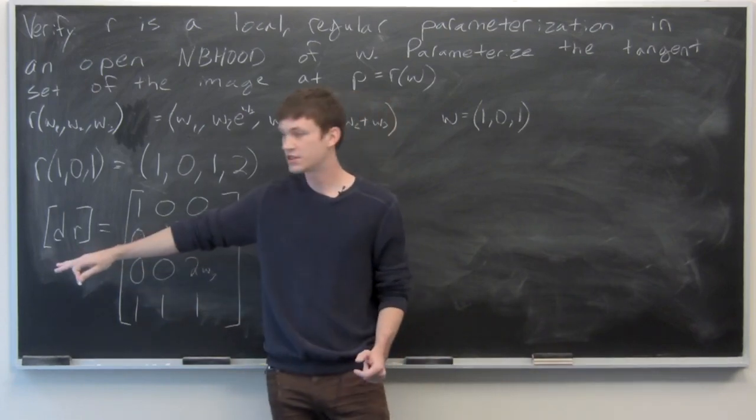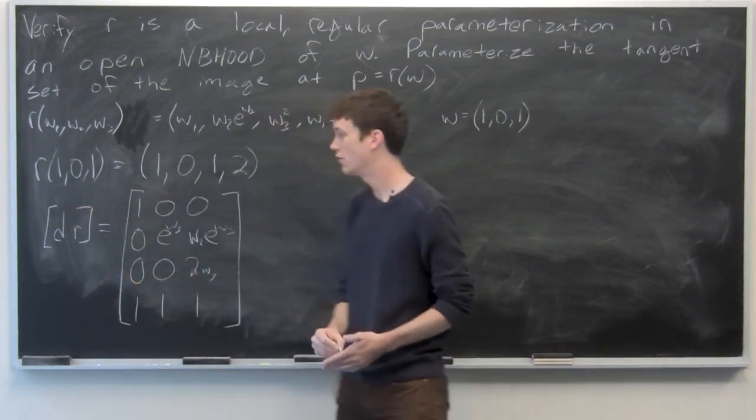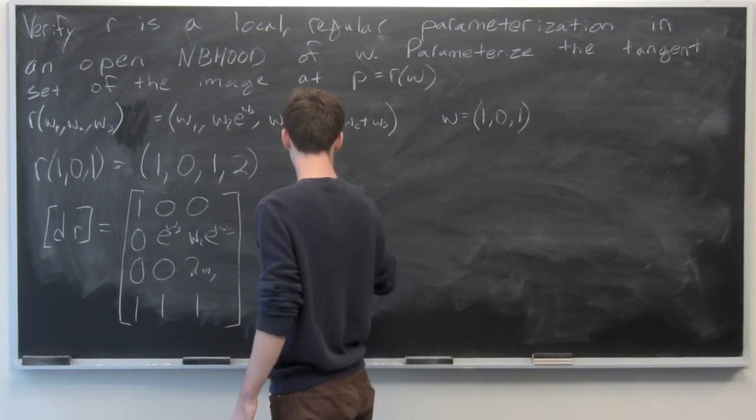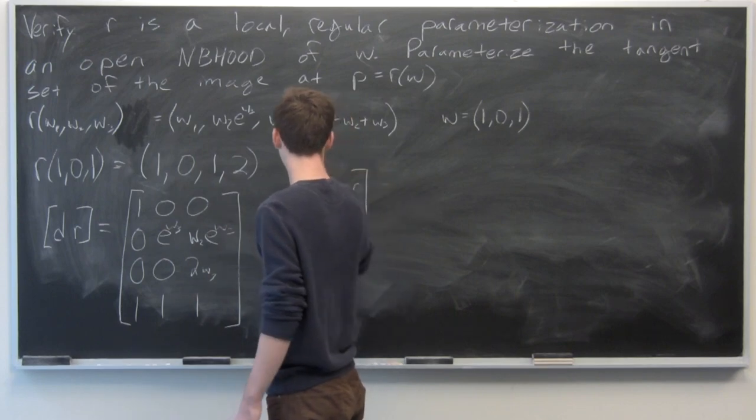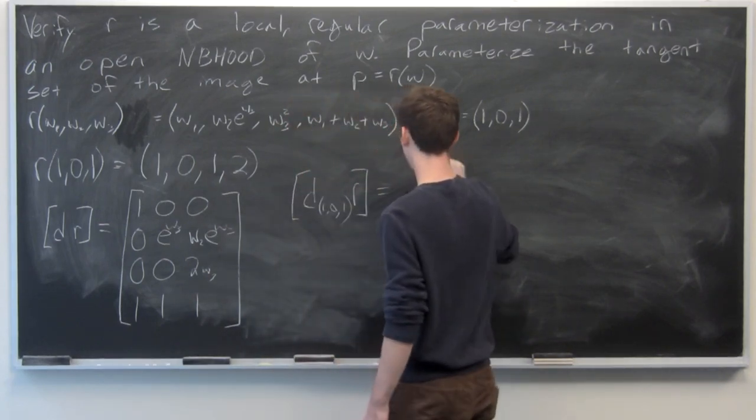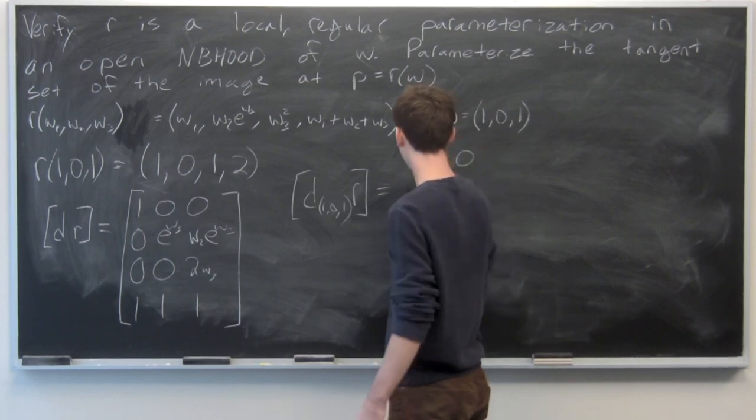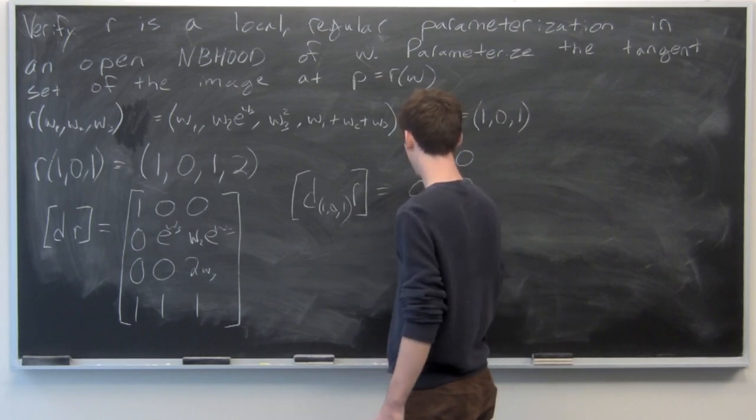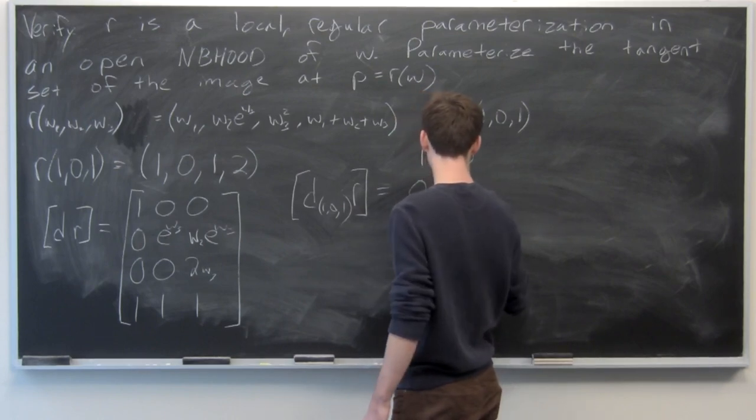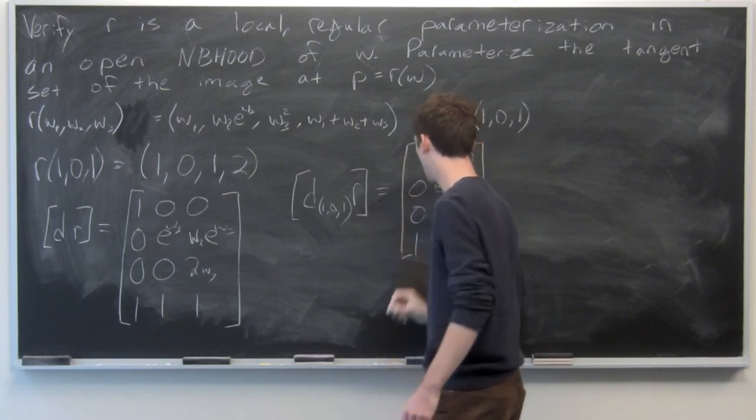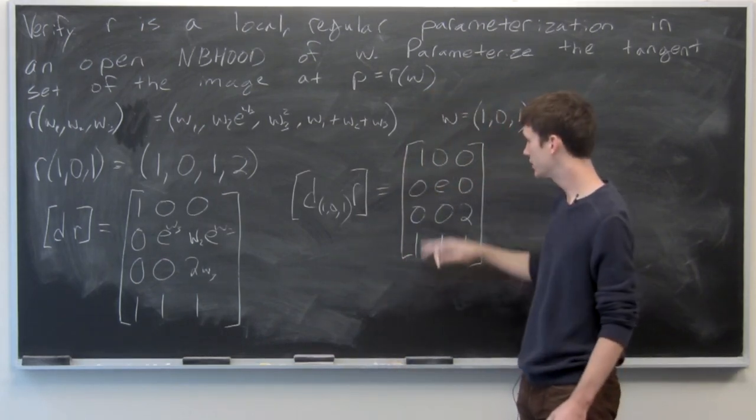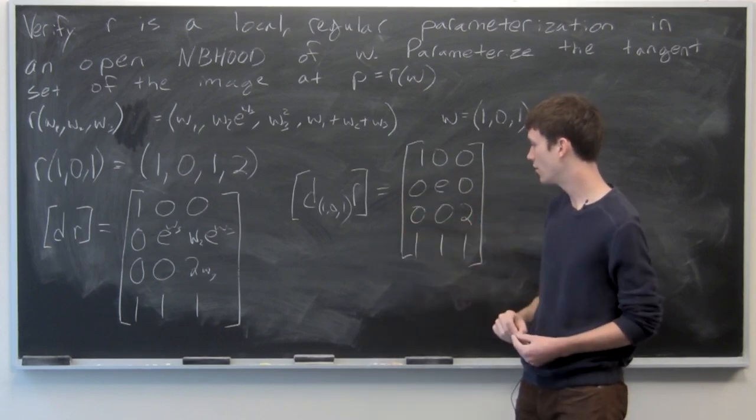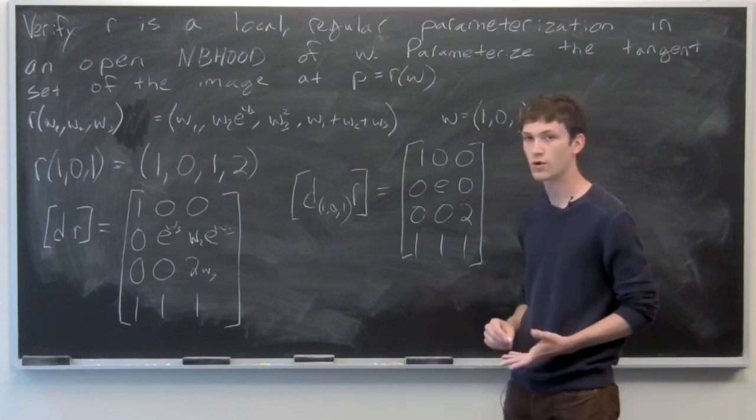Now we want the Jacobian matrix to be evaluated at our point w, which is 1, 0, 1, so we'll go ahead and do that as well. And we get the following matrix: first row is 1, 0, 0, second row is 0, e, 0, third row is 0, 0, 2, and fourth row is 1, 1, 1.